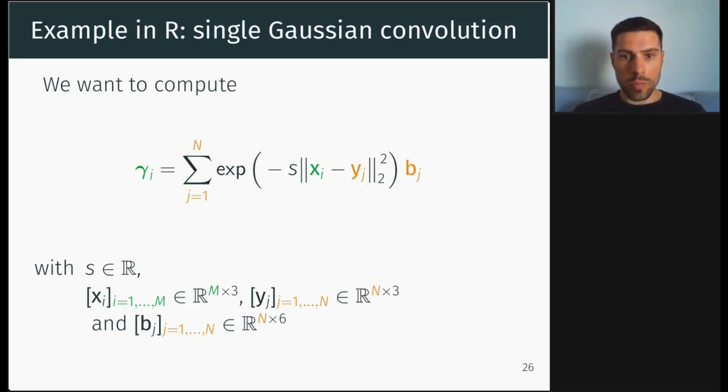So what we want to do here is to compute a reduction, so here is a sum, of a Gaussian kernel between two data vectors x and y indexed by i and j and applied to a filter matrix which is B. Here you have some filter vector B indexed by j. So it is an operation, it is what it is. And how you're going to do that in R?